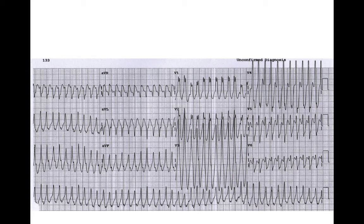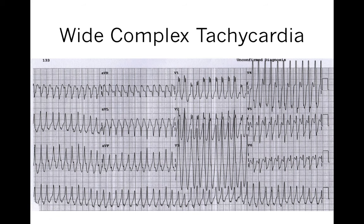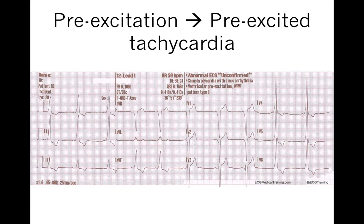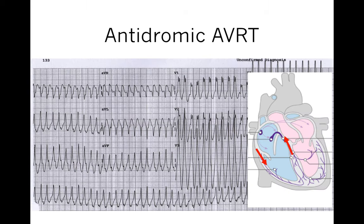Here's another example of a wide complex tachycardia. Looking at the rules discussed, this looks like ventricular tachycardia — it does not look like a typical left or right bundle. However, after getting the patient out of their rhythm, we see that they have pre-excitation: they have a delta wave. So that was an example of antidromic AVRT where the patient has an accessory pathway and depolarization is going down the pathway and up the AV node. Because depolarization goes down the pathway through muscle rather than the His-Purkinje system, we get a wide complex QRS and wide complex tachycardia.